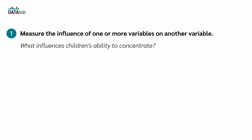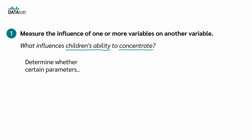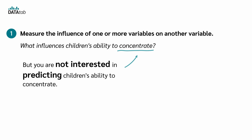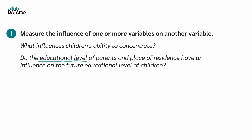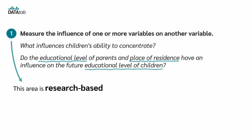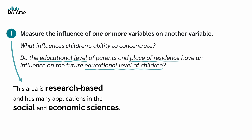In the context of your research, you may be interested in understanding the factors that influence children's ability to concentrate. Specifically, you aim to determine whether certain parameters have a positive or negative impact on their concentration — but in this case, you're not interested in predicting children's ability to concentrate. Or you could investigate whether the educational level of the parents and the place of residence have an influence on the future educational level of children. This area is therefore very research-based and has many applications in social and economic sciences.